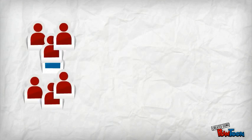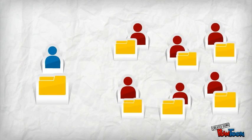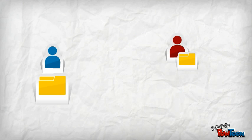Each teacher in class has a single notebook. Inside the notebook is a section group for the teacher and a section group for each student. The teacher will see everything, while students will only see the teacher section and their own.